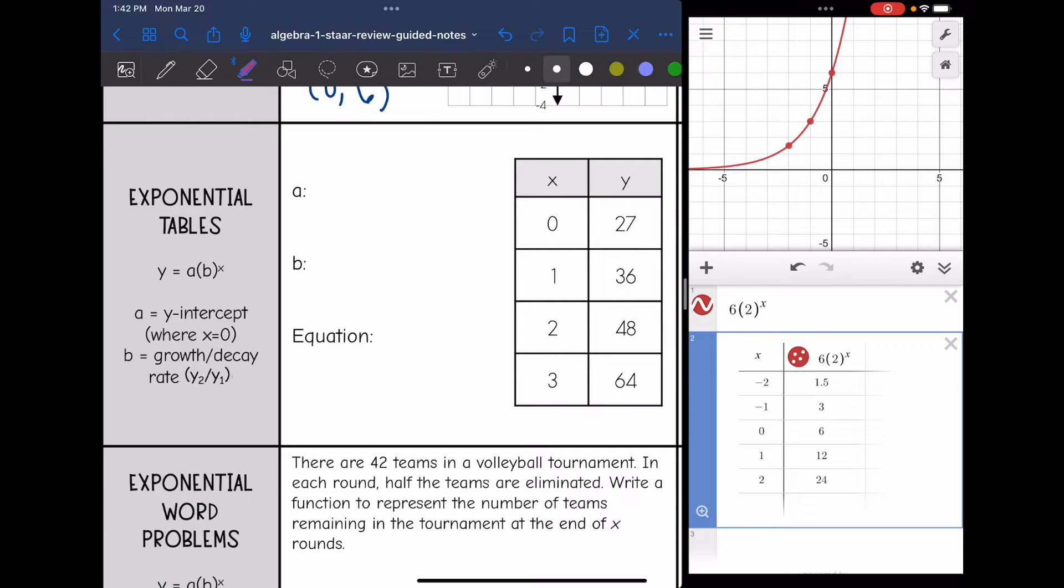So on this first one, the y-intercept is easy to see that would be 27 because that's where x is zero. To find my b value, I need to do y2 divided by y1 with two consecutive points. So I'm just going to use those first two points. Since they're consecutive, I go from zero to one. So 36 over 27 would be my b value, which those are both divisible by nine. So that simplifies to three halves. So then my equation would be y = 27(3/2)^x.